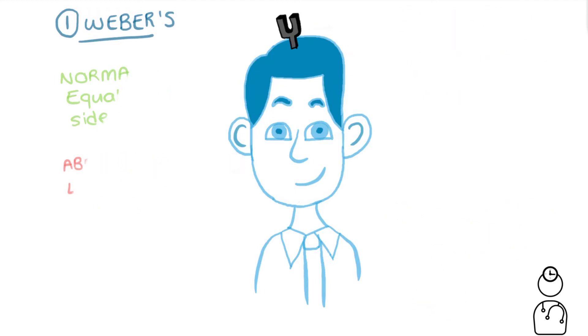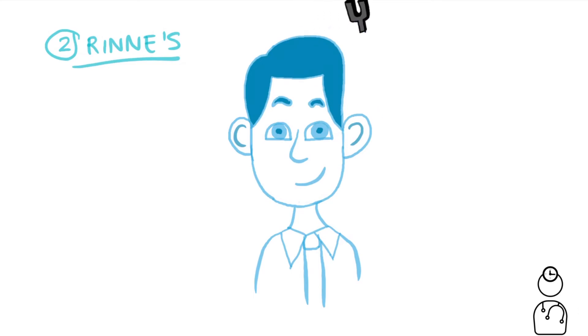Now we can move on to the Rinne's test. We need to strike the tuning fork and hold it on Bob's mastoid process. We need to ask him if he can hear the sound and then to tell us when he can't hear it anymore. This will measure bone conduction.